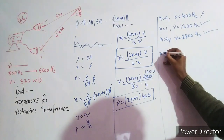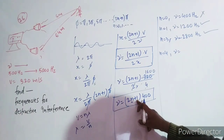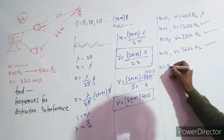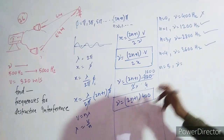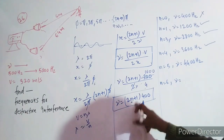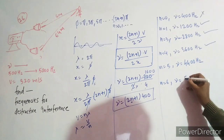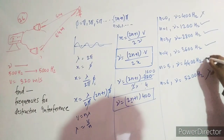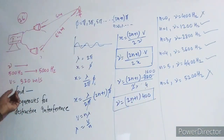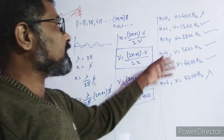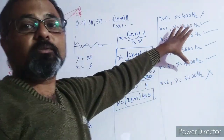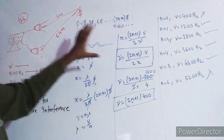n=2 पर frequency = 5 × 400 = 2000 Hz। n=3 पर frequency = 7 × 400 = 2800 Hz। n=4 पर frequency = 9 × 400 = 3600 Hz। n=5 पर frequency = 11 × 400 = 4400 Hz। These frequencies — 1200 Hz, 2000 Hz, 2800 Hz, 3600 Hz, and 4400 Hz — fall within the range 500–5000 Hz and will give destructive interference.